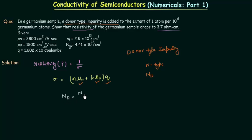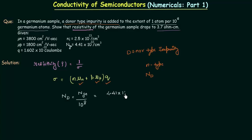N_d is equal to N_ge divided by 10 to the power 8. I can write this because the problem states one atom per 10 to the power 8 germanium atoms. The concentration of germanium is 4.41 × 10^22 per centimeter cube, and we have one atom per 10^8 germanium atoms. So the donor ion concentration N_d equals 4.41 × 10^22 divided by 10^8, which gives 4.41 × 10^14 per centimeter cube.